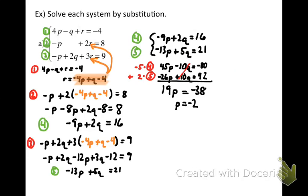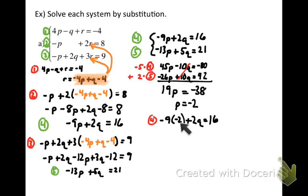From here it's a chain reaction. Now that I know one variable, I can go back to any two-variable equation and substitute for that variable to find the next one. I'll go back to equation 4, replace P with negative 2, and find Q. This gives me 18, and canceling by subtracting 18 from both sides leaves 2Q equals negative 2, so Q equals negative 1. Now that I know both P and Q, I'm guaranteed to be able to figure out R using any equation that had an R.